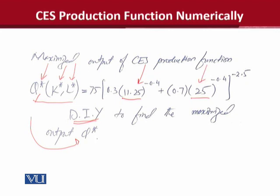So in this way, we have learned that CES production function can also be optimized. Hymn is maximized output ko bhi calculate kar sakte hain. Jaisa ke, arm Cobb-Douglas production function ke liye kar sakte hain.